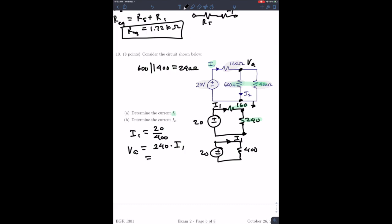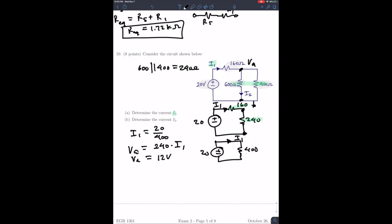So once I have VA, I think when you plug that in, what you get is 12 volts for VA. That lets me calculate I2, because I know the voltage across here is 12. So 12 divided by 600 gives me the answer for I2. And you know, this is an electrical problem, so the units are obvious. Current is in amps. So there's the solution to problems 9 and 10 from exam 2.